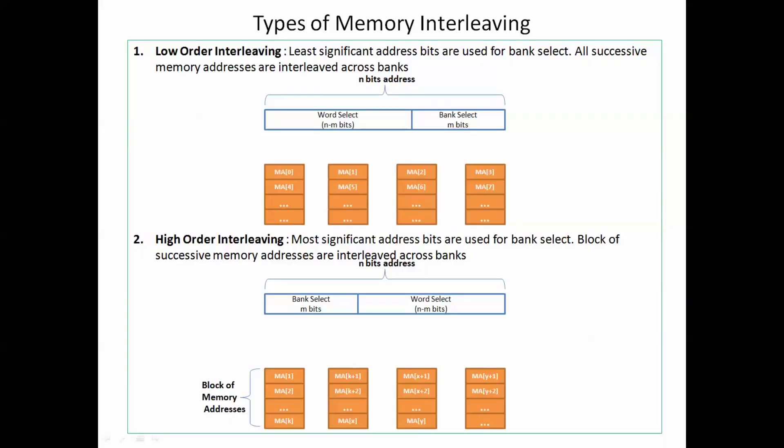Now let's see the different types of interleaving. There are two types of interleaving: low-order interleaving and high-order interleaving. In low-order interleaving, the least significant bits of the address are used to select the bank, and high-order bits are used to select the word in the selected bank. In this type of interleaving, subsequent memory addresses are spread across the banks.